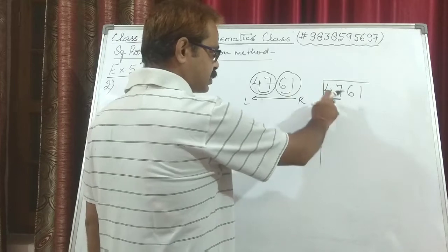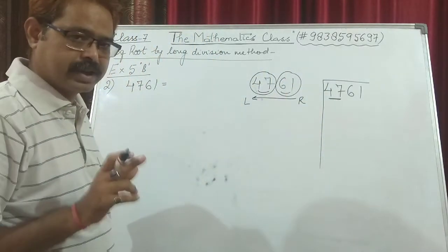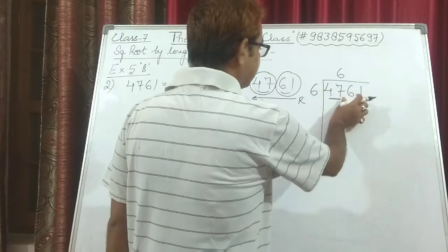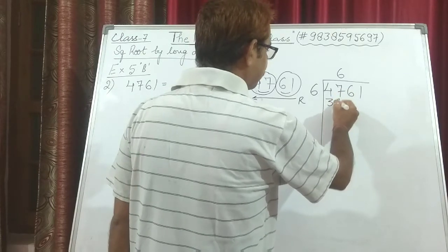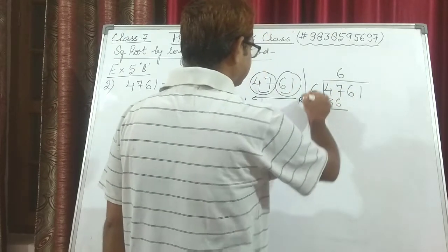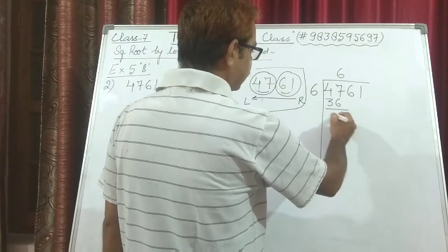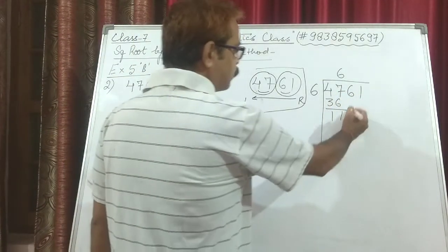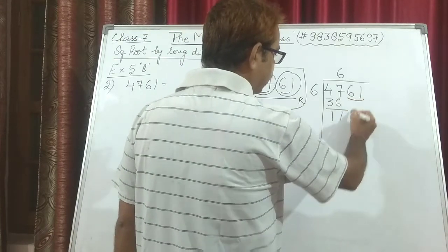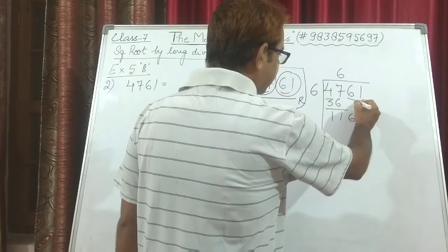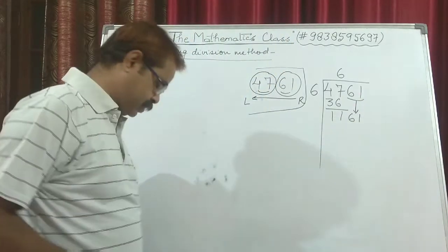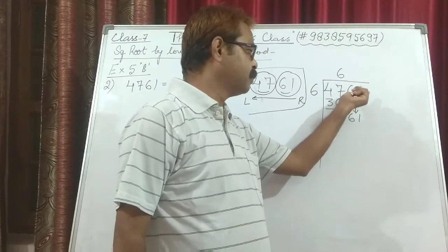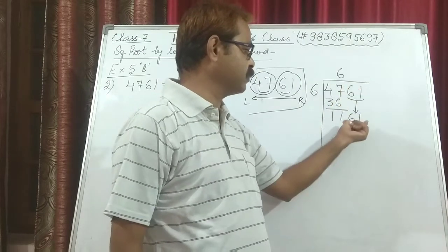6 into 6 is 36, and 7 into 7 is 49. So we will go with 6. We write 6, and 6 times 6 is 36. What is left is 11. Now, in normal division we carry down the next digit, but here we carry down the whole pair — that is 61 completely goes down.